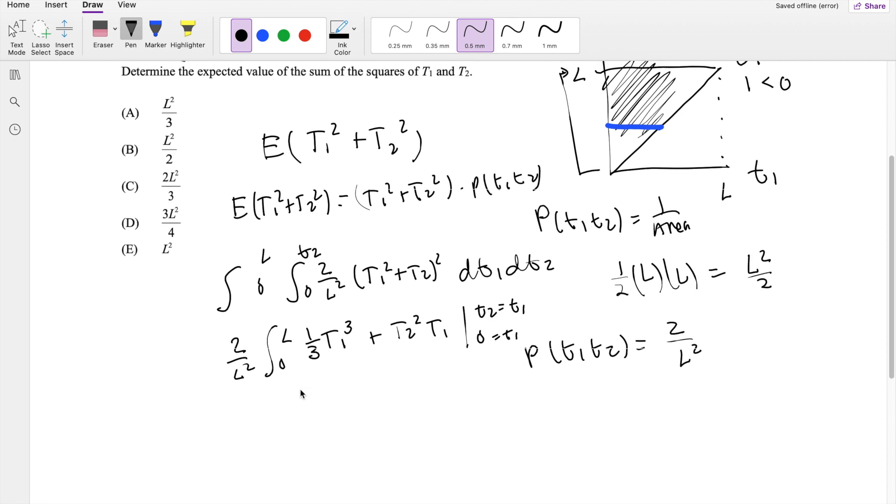Okay. So plugging in those values, you get 2 over L squared, 0 to L, 1 third, T1. That's going to be T2 squared, right? For the upper limit, T2 squared cubed, plus right here, if I plug in the upper limit, you get T2 squared cubed as well, minus the lower limits are just going to give you 0. So this is what we get, integrating in respect to DT2.